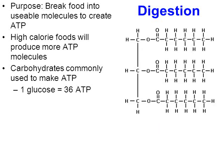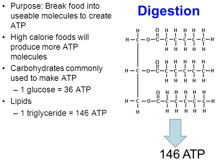It's even more when you look at a lipid. A triglyceride — three fatty acids connected to a glycerol head — can actually yield up to 146 ATP molecules. So we get a lot more ATP from fats. That doesn't mean we should eat a huge amount of fats, because there's only so much ATP we can use in a day. If our body produces more ATP than can be used, the energy will be stored in the form of fat.